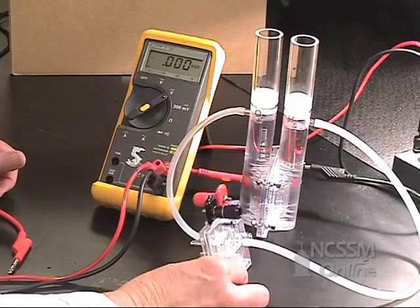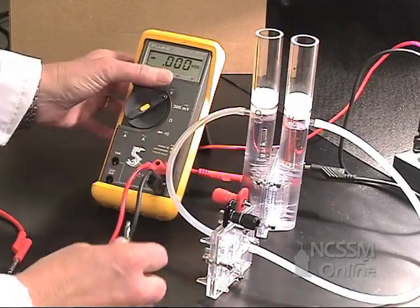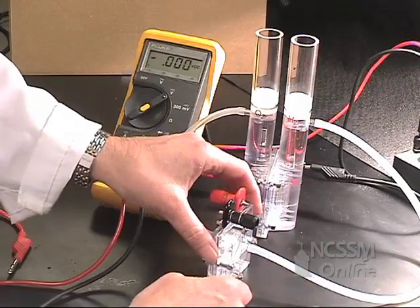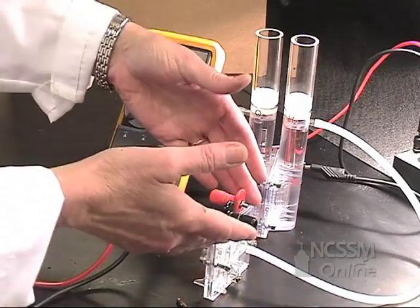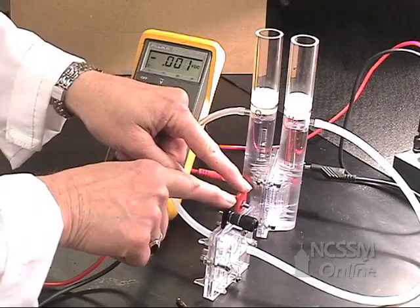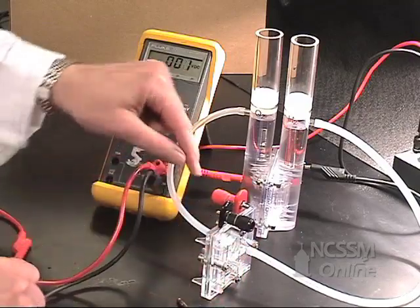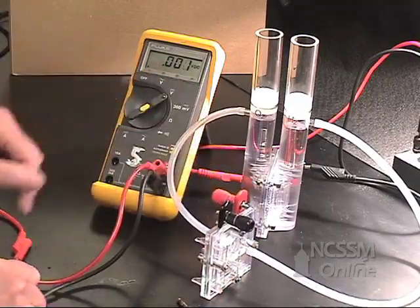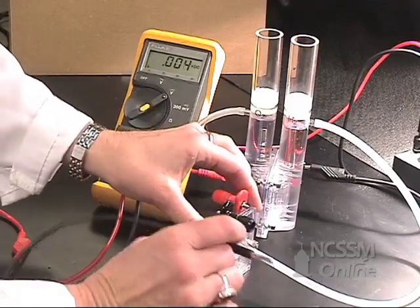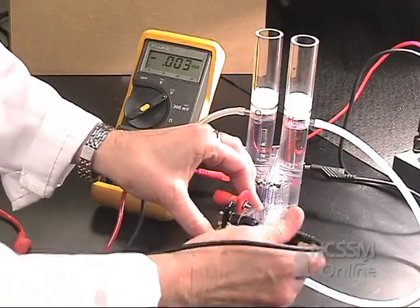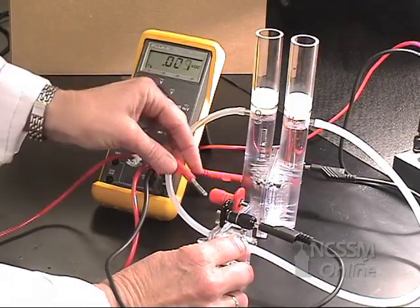We're going to measure that by connecting our voltmeter to our fuel cell. Notice we don't have any electrons coming into our fuel cell. The only thing we have is the hydrogen gas coming in on this side and the oxygen gas coming in on this side. So I'm going to connect this so we can measure the voltage that's actually being produced.